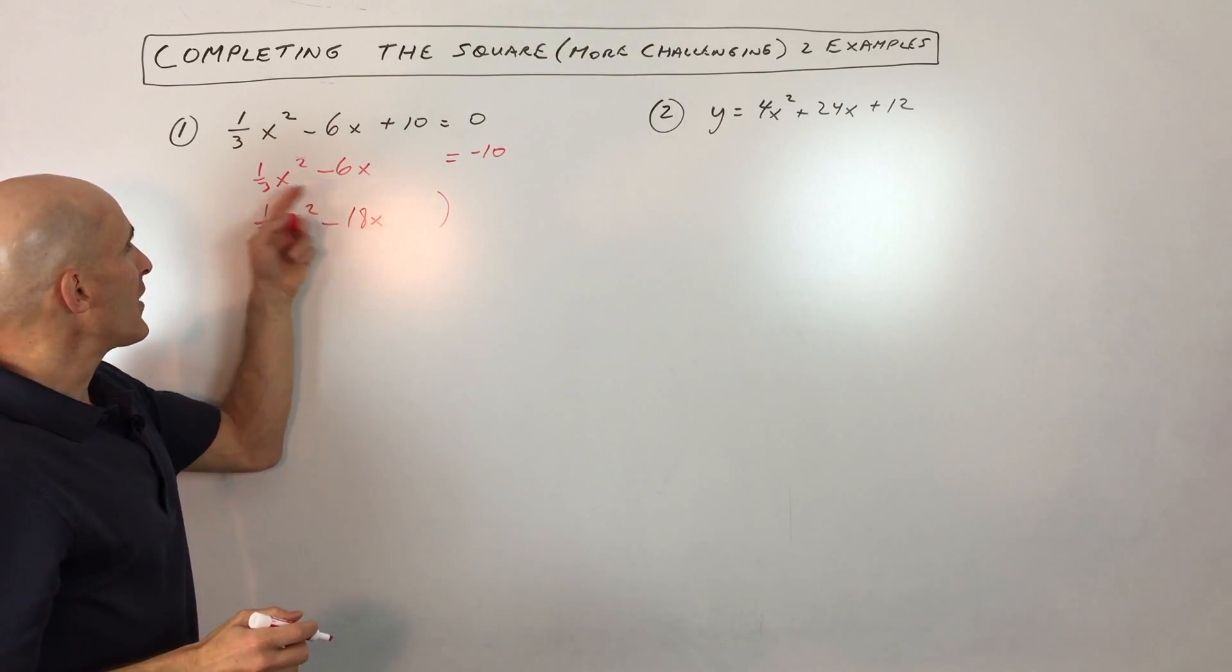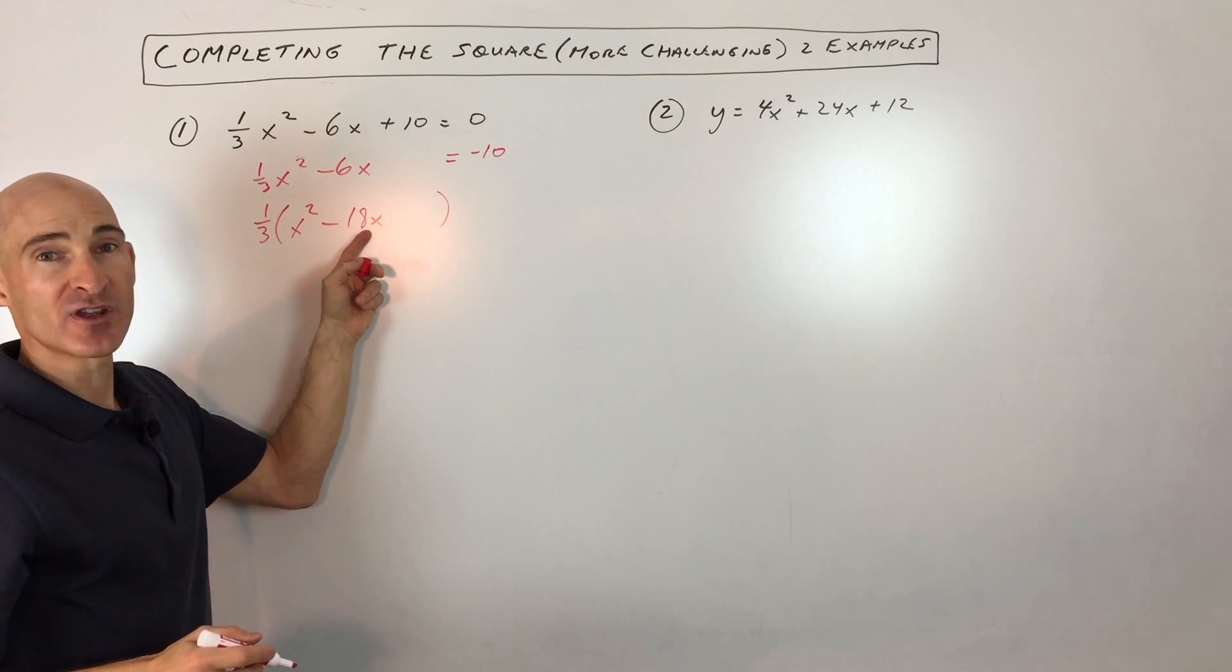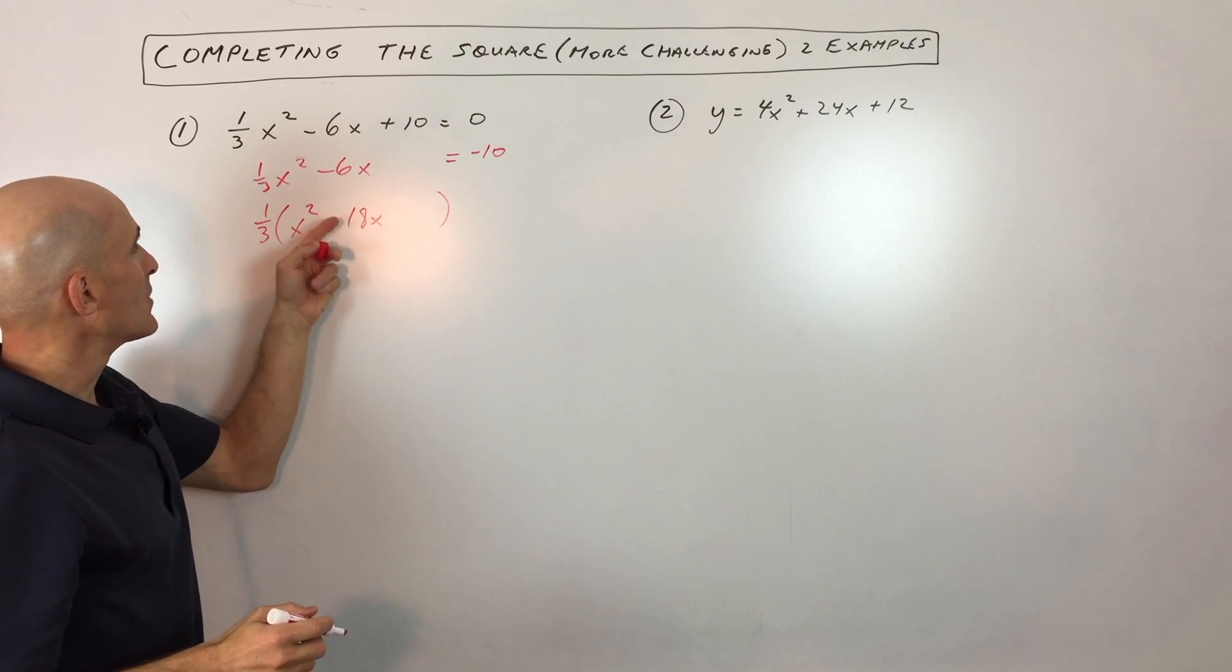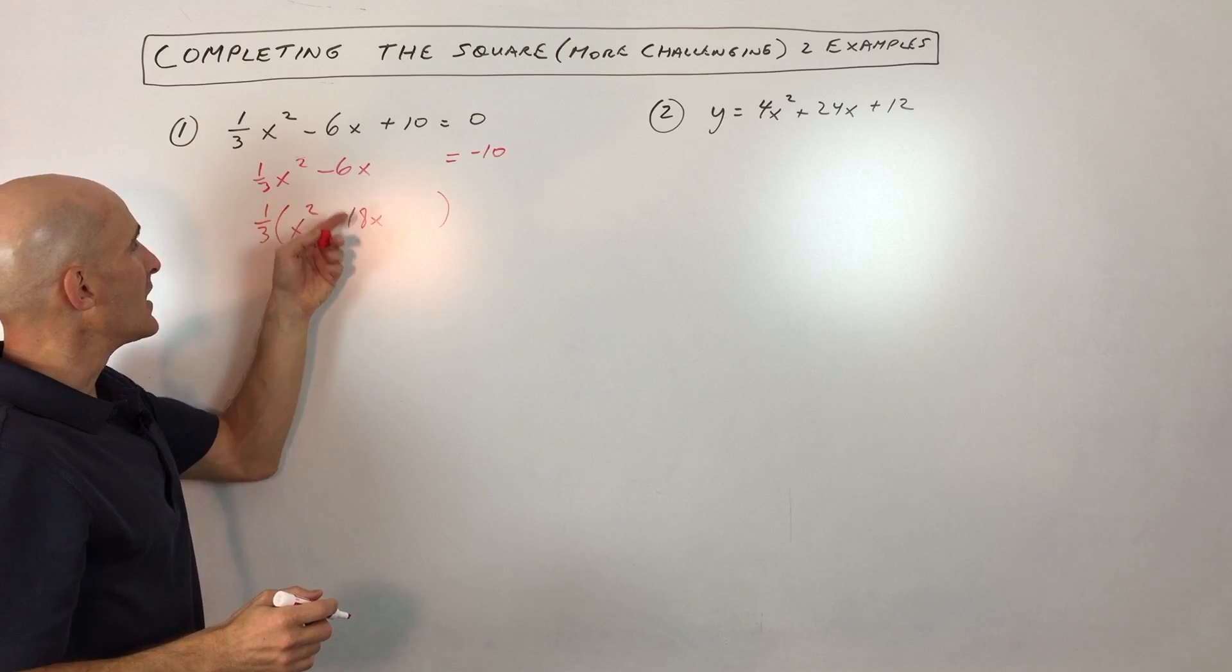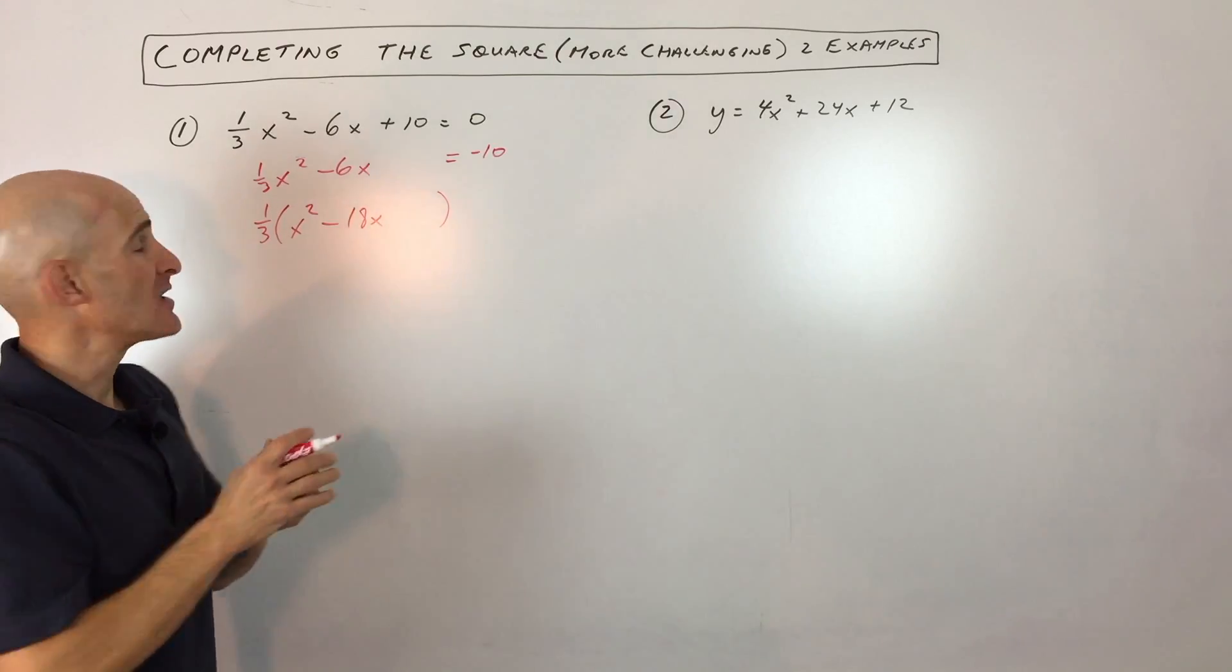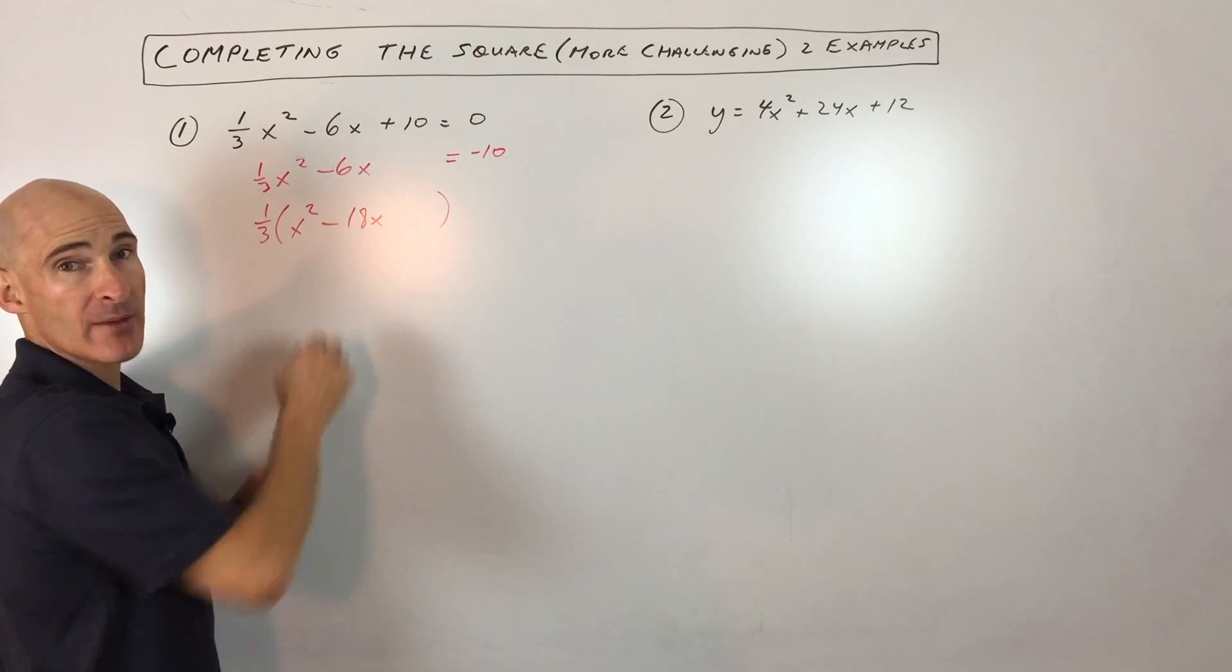And you're probably wondering, well if I'm factoring out the one-third, why is this number getting larger? Well you have to realize that when you're factoring out one-third it's like dividing by three. And so you want to counterbalance that by multiplying by three.